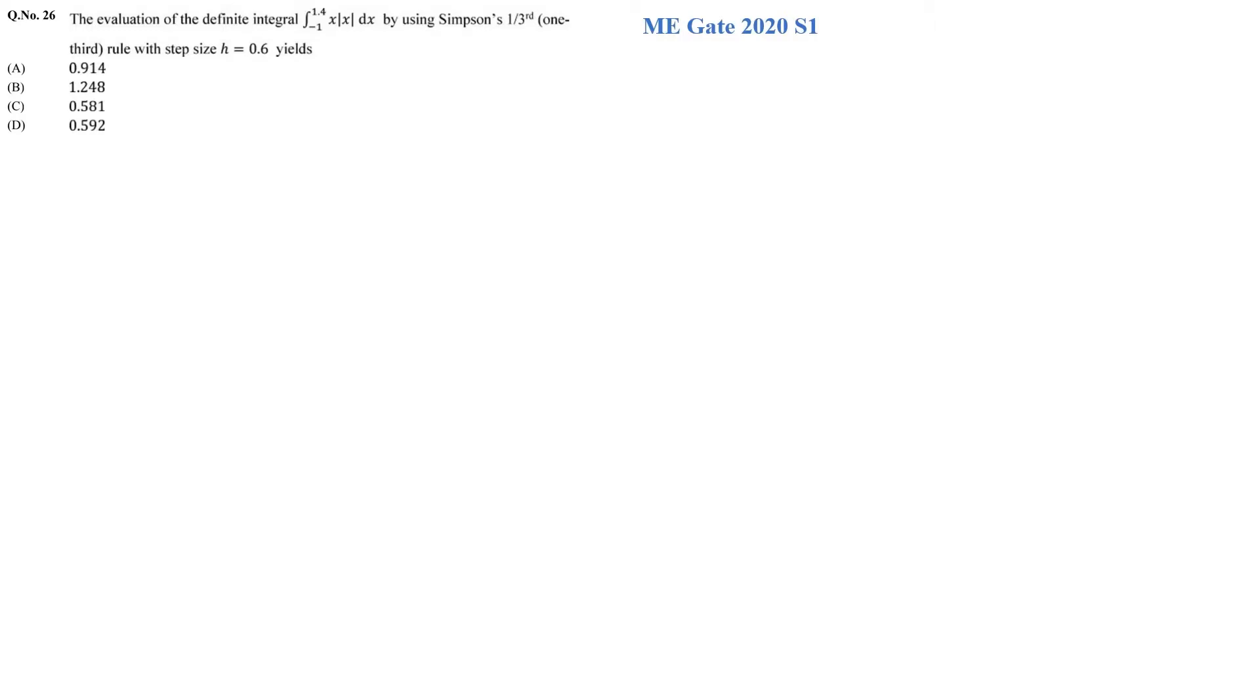In the question we have to evaluate a definite integral ranging from minus 1 to 1.4 having the value x mod of x dx by using the Simpson's one-third rule and the step size has been given to us which is equal to 0.6.